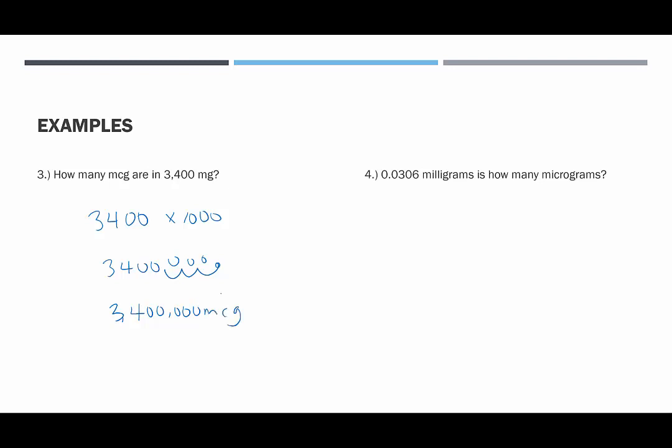And the last example, 0.0306 milligrams is how many micrograms? We would take this value to convert from milligrams into micrograms and multiply it by 1,000, move it 1, 2, 3. We end up with 30.6 micrograms.